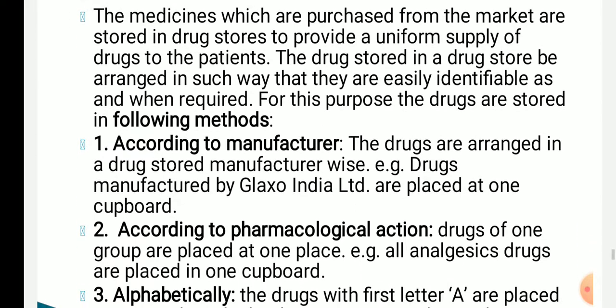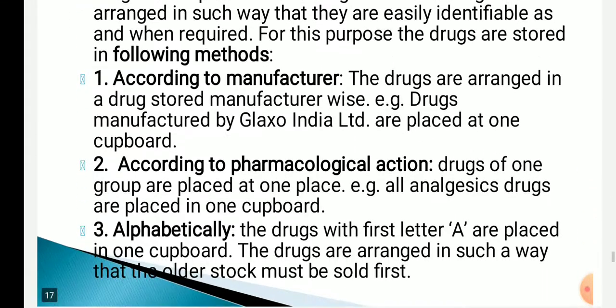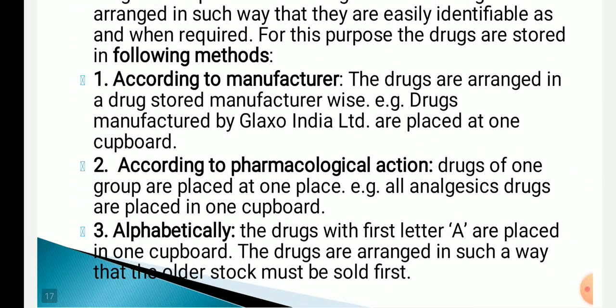There are three methods of storage: according to the manufacturer, according to the pharmacological action, and alphabetically. According to manufacturer means drugs are grouped by their manufacturing company, such as Pfizer, Glaxo, or Cipla.